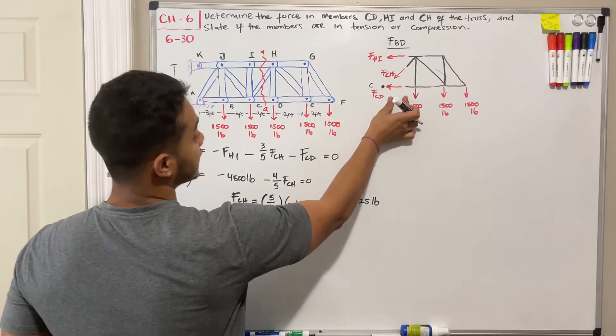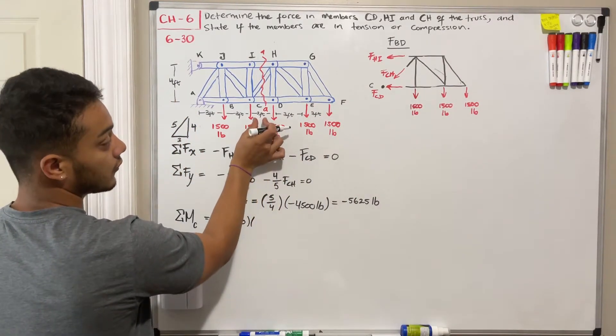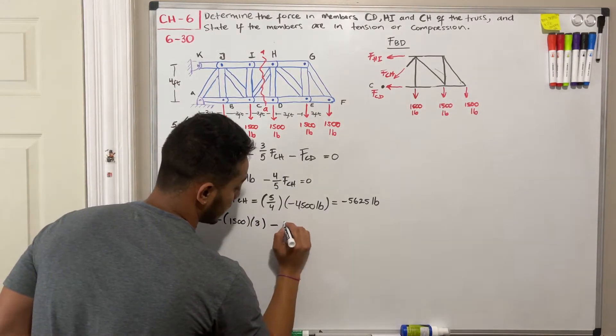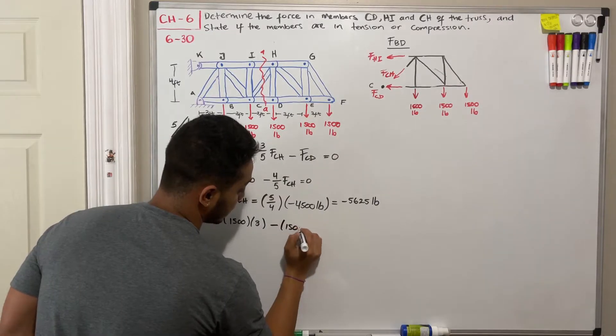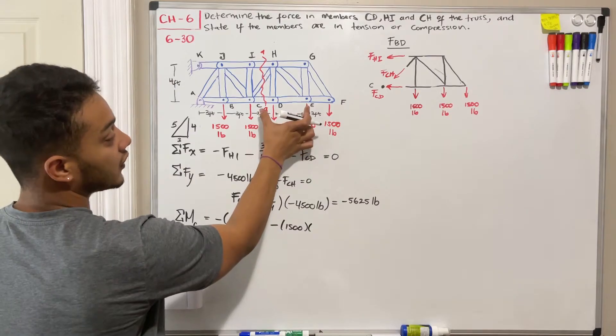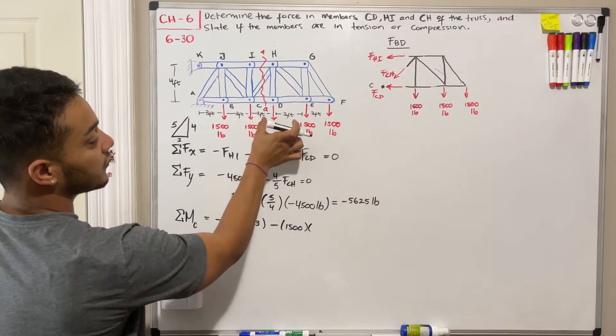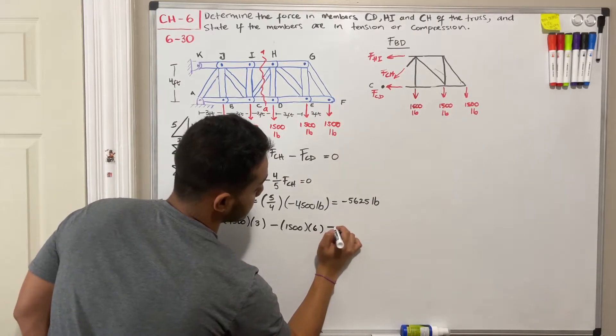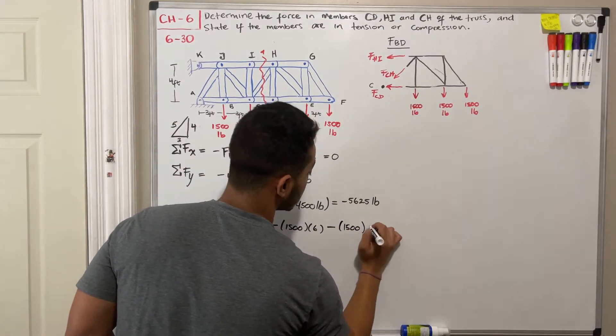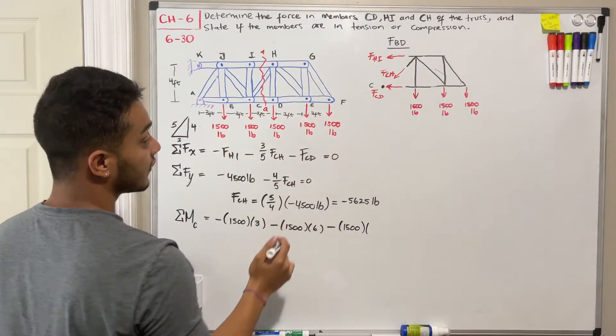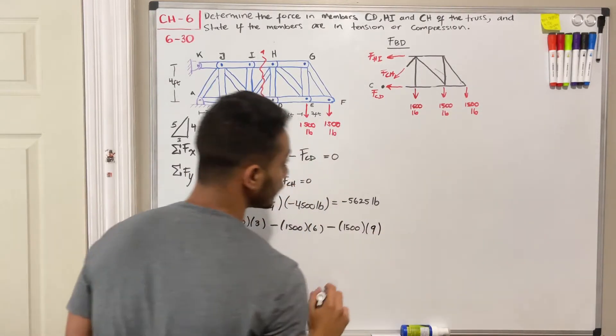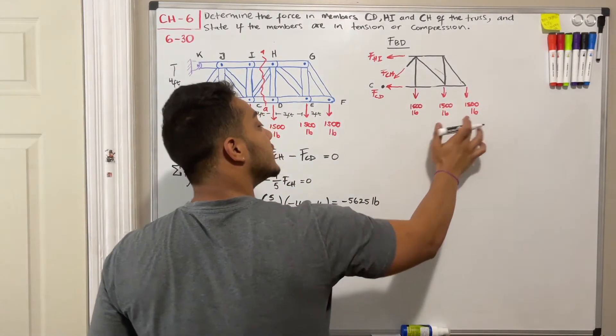So multiply by 3 minus another 1500 multiplied by what's the distance between C and this point E over here. So it will be 3 plus 3. That gives me a 6 minus 1500 multiplied by the distance between point C and my point F. And that should be equal to 9. So we're just increasing by 3. Okay. So we're done with this guy, this guy, and that guy. All we're left is FHI.